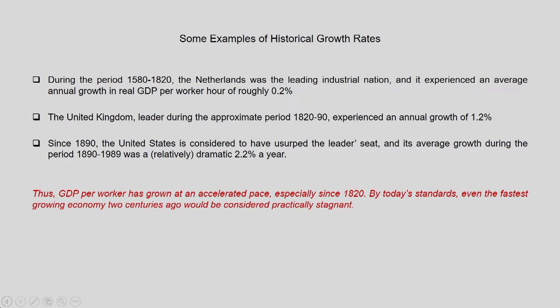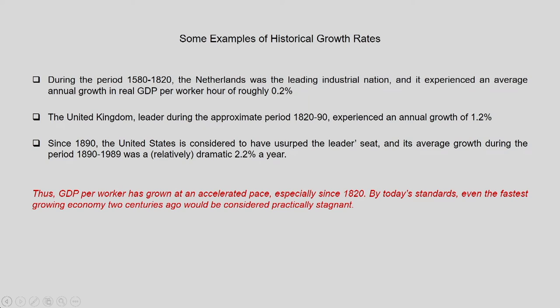Though 2.2 percent seems small today, it was dramatic compared to the 0.2 percent of the Netherlands or 1.2 percent of the UK. This means GDP per labor productivity has grown at an accelerated pace, especially since the 19th century. By today's standards, even the fastest growing economy two centuries ago would be considered practically stagnant. Through most of human history, appreciable growth in per capita GDP was an exception rather than the rule.